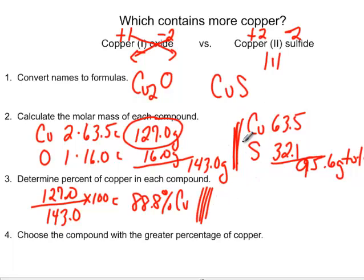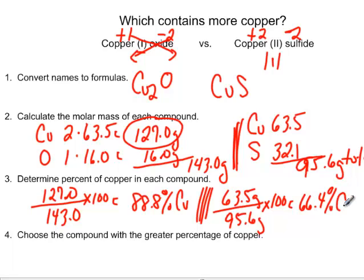The other formula, CuS, has 63.5 grams of copper in a grand total of 95.6 grams of copper sulfide. Divide the two, multiply by 100 and this comes out to about 66.4 percent copper.